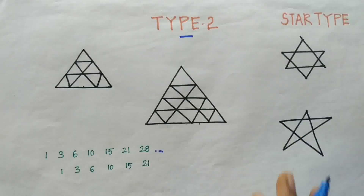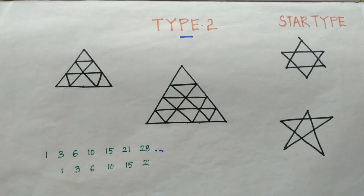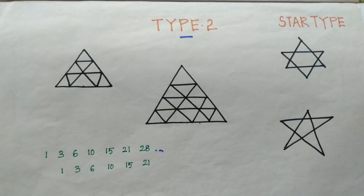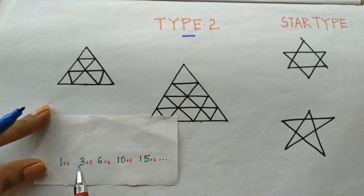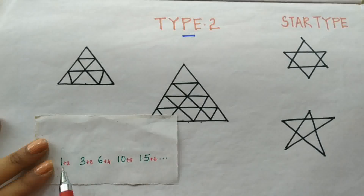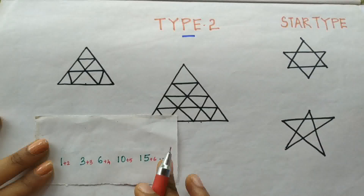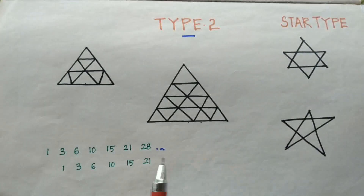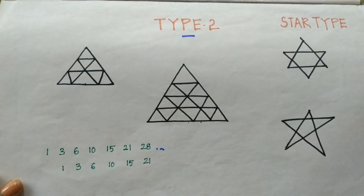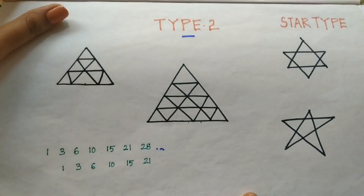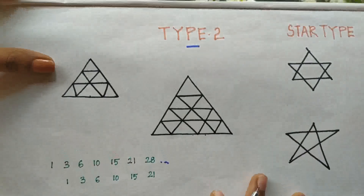For the trick, we have to remember a number series. Deriving this number series is very easy — I'll show you. One plus two equals three, then three plus three equals six, then add four to get ten, then five to get fifteen, then six to get twenty-one. We keep adding the next number. This is how we derive this number series.